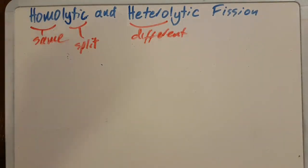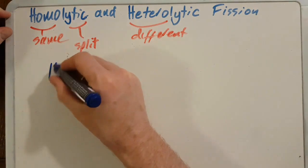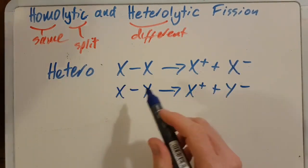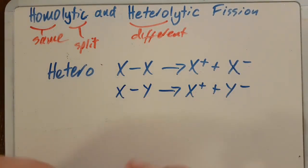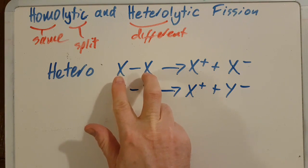Now the homo and hetero does not refer to the atoms in the bond, it refers to the bond itself. So let's first of all have a look at heterolytic. Now these are both heterolytic, even though the atoms are the same here.